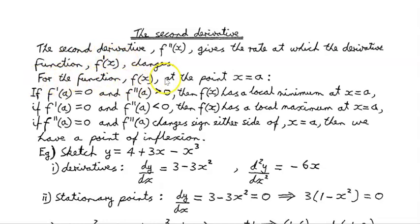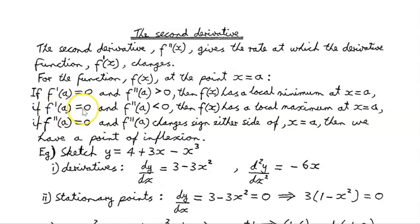For the function f of x at the point x equals a: if f dash of a is 0 — meaning it's a stationary point — and f double dash of a is greater than 0, then f of x has a local minimum at x equals a. If f dash of a is 0 and f double dash of a is less than 0, then f of x has a local maximum at x equals a.